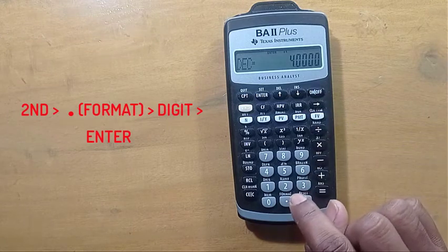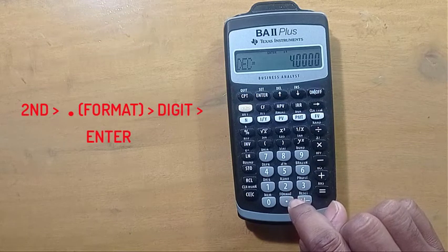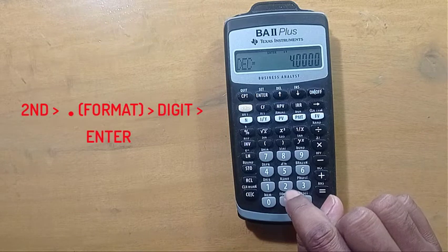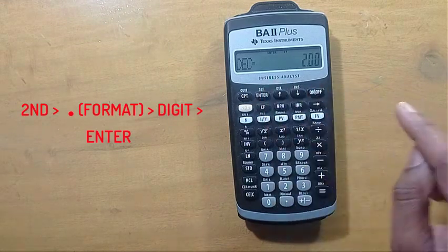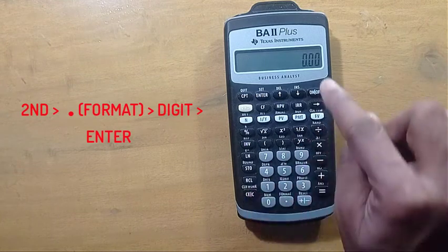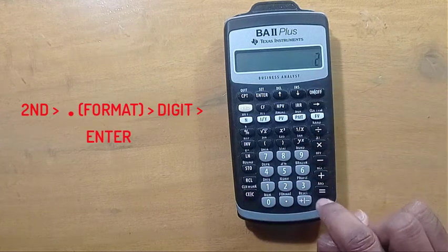Now if you want to get two digits after the decimal point, press 2 and enter. See, you have two digits after the decimal point.